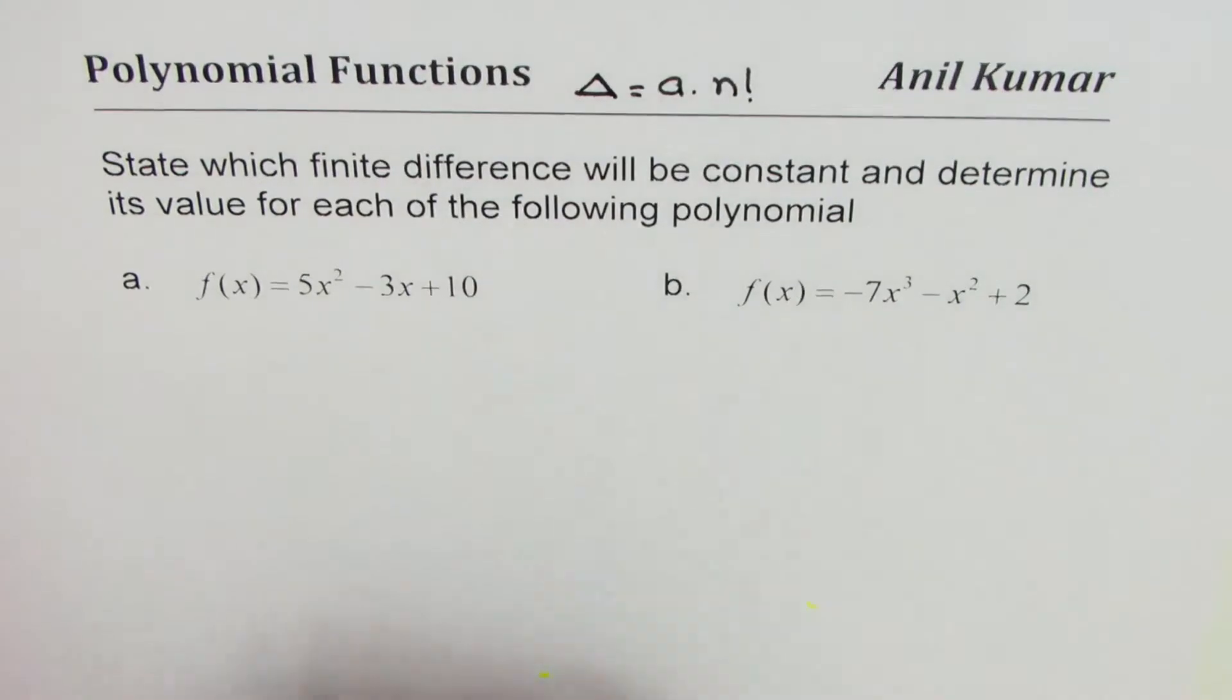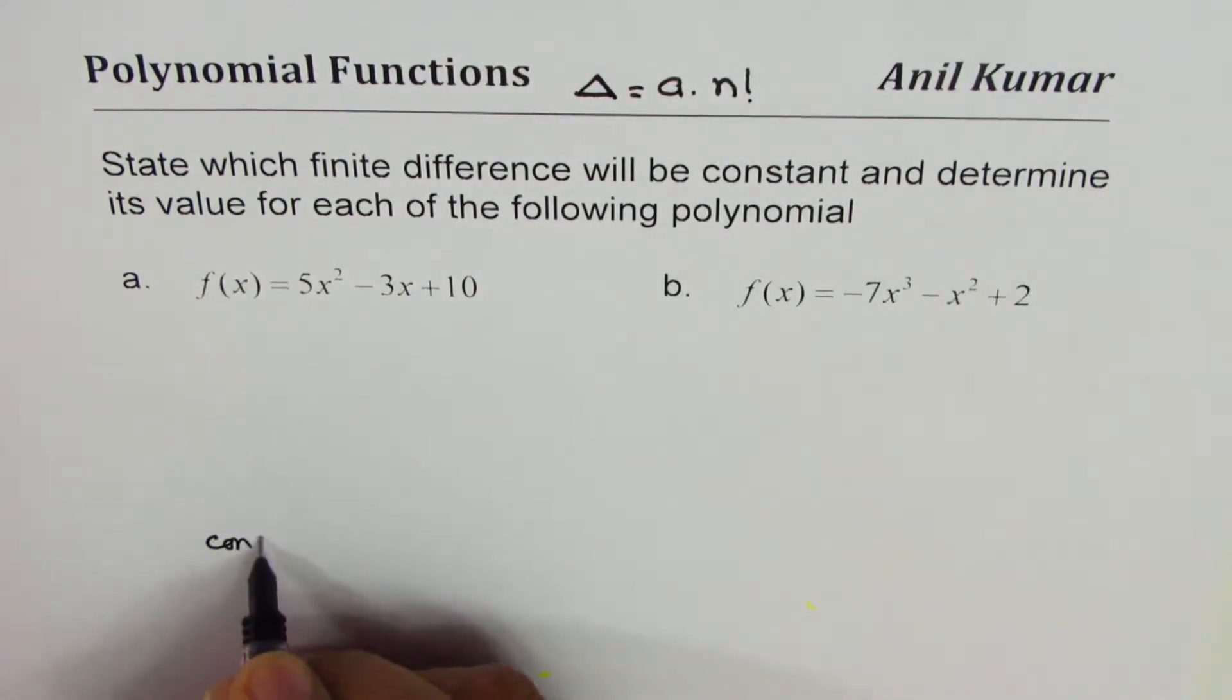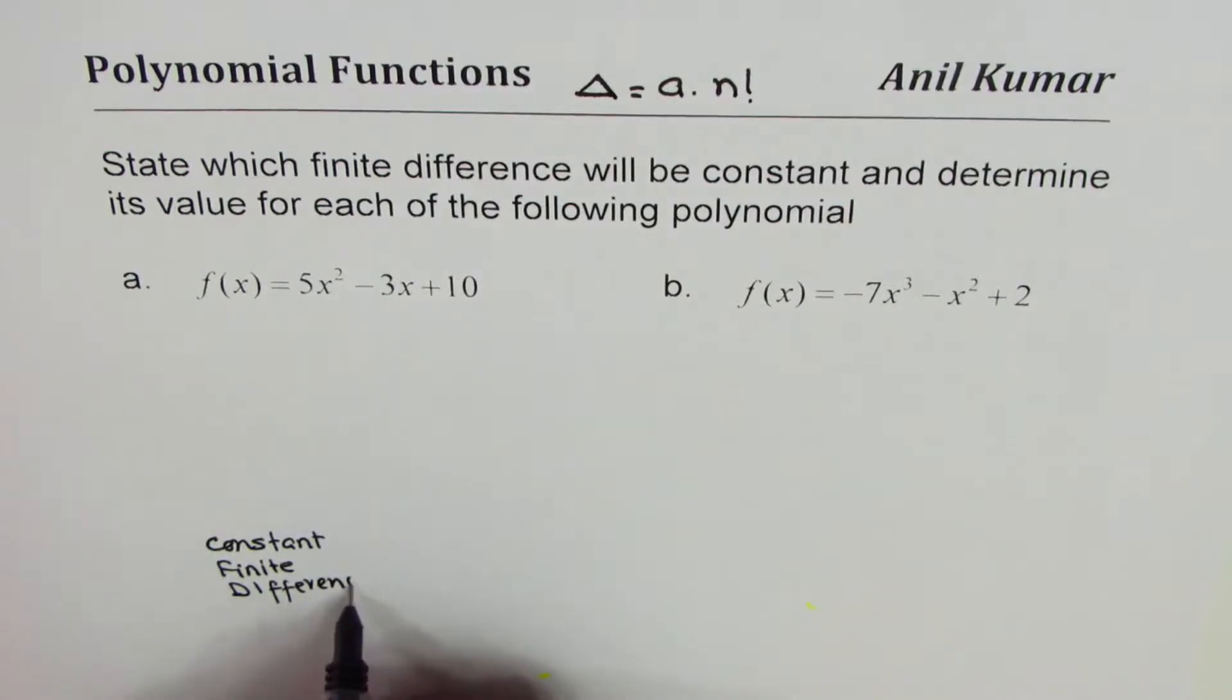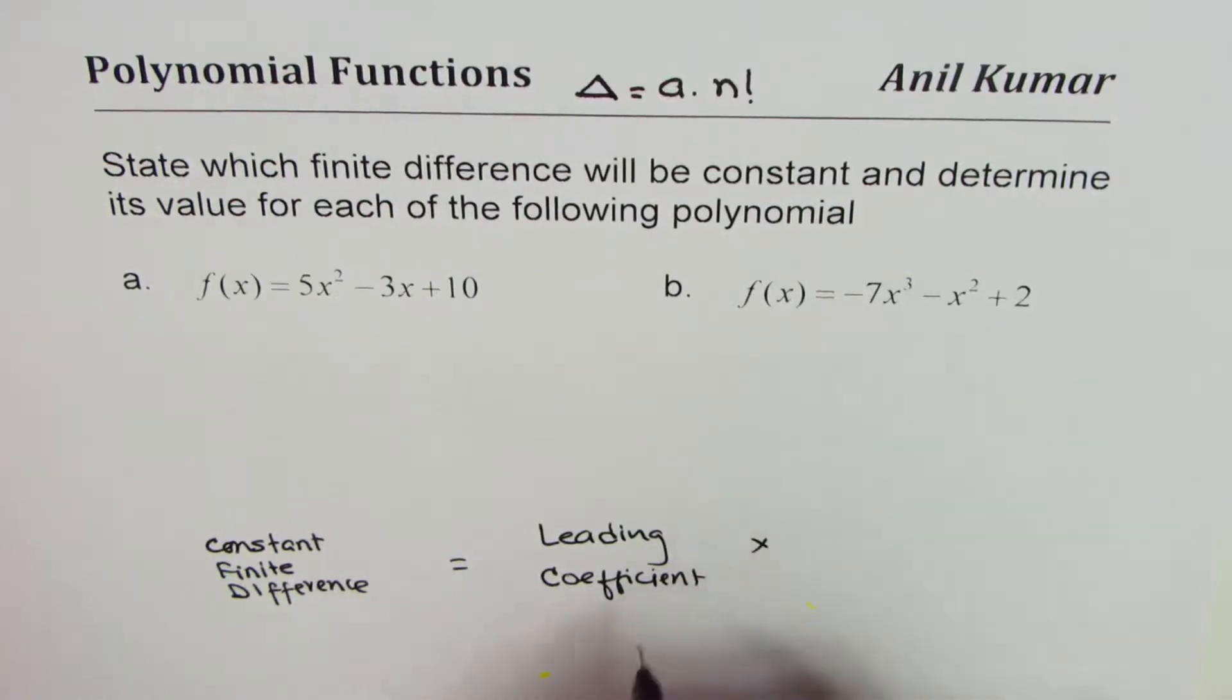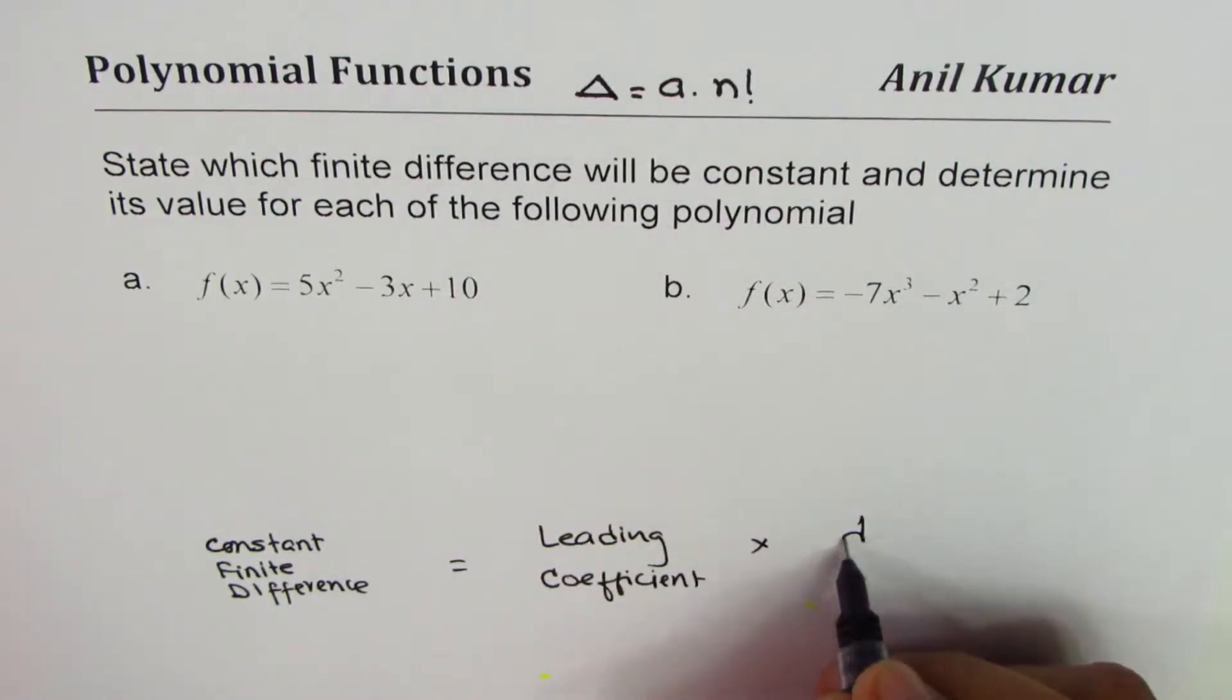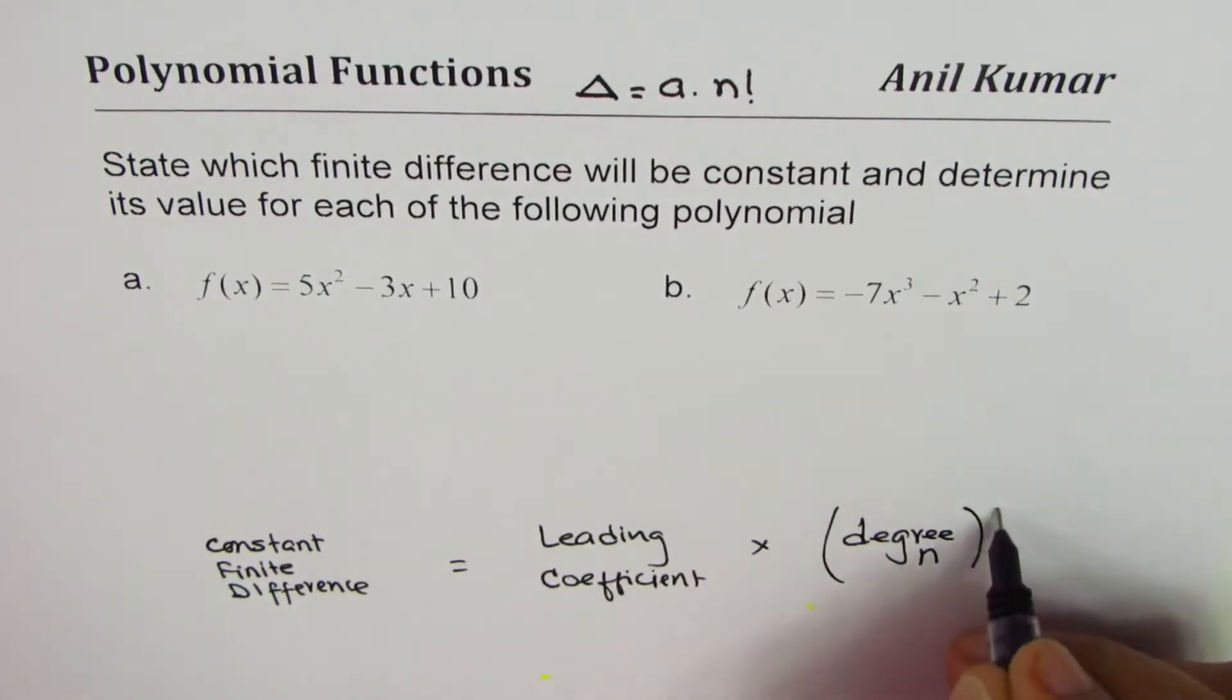Let me write it for you. Constant finite difference is product of leading coefficient and degree, which we are saying n, degree factorial.